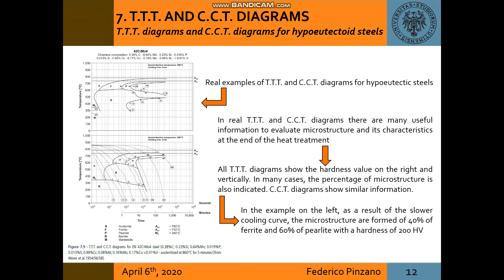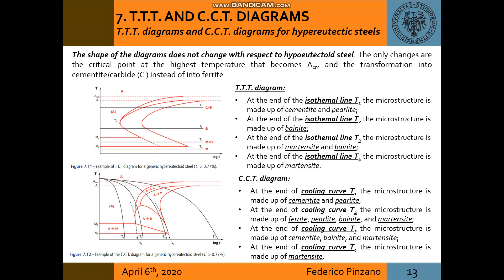For hypoeutectoid steels, in real TTT and CCT diagrams, there are many useful information to evaluate microstructure and these characteristics at the end of the treatment, like for example, the hardness values shown here. For hypereutectoid steels, it's the same for the other steels already seen. And here there is a resume for TTT diagram, for example, at the end of the isothermal line T1, the microstructure is made up of cementite and pearlite, and so on for the other isothermal lines. And for CCT diagram, at the end of the cooling curve T1, the microstructure is made up of cementite and pearlite, and similar for the other cooling curves.